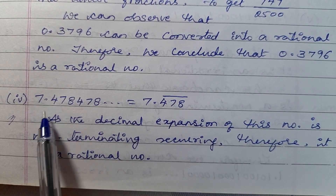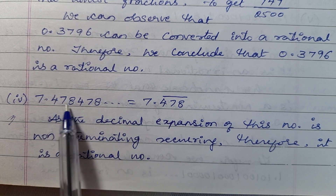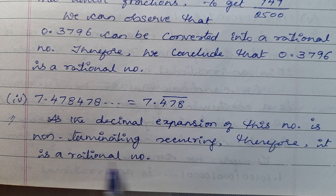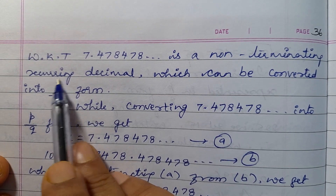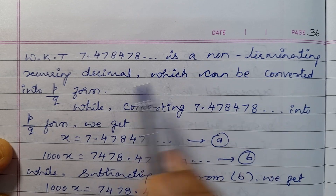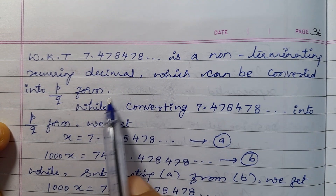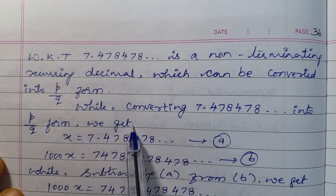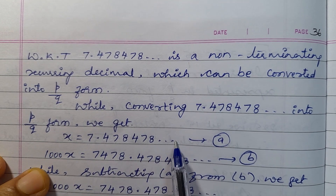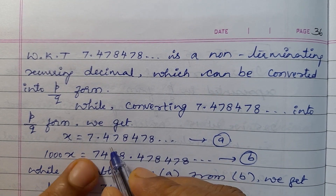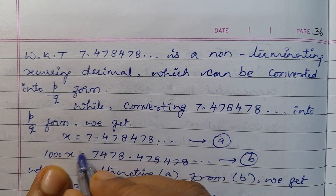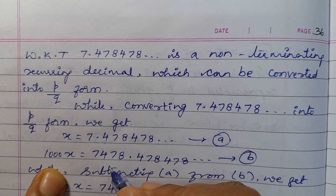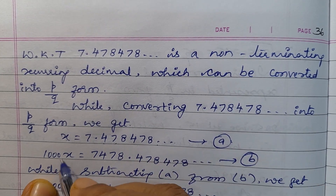Next, the fourth one: 7.478478... As the decimal expansion of this number is non-terminating, recurring — the digits 478 repeat — therefore it is a rational number. We know that 7.478478... is a non-terminating recurring decimal which can be converted into P/Q form. While converting, let x = 7.478478... — call this equation A. Since 3 digits repeat, multiply both sides by 1,000: 1,000x = 7,478.478478... — call this equation B.